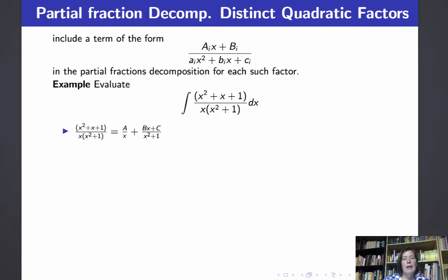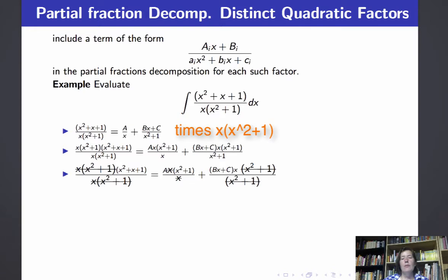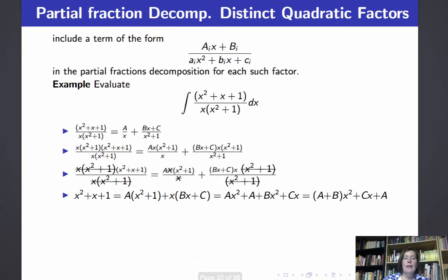Now we must solve for A, B, and C. The first step is to multiply across by q(x), the denominator on the left hand side. Multiplying across and cancelling, we end up with x² + x + 1 on the left hand side and A(x² + 1) + x(Bx + C) on the right hand side. When two polynomials are equal, the coefficients of each power of x must be equal, so we expand the right hand side, gather terms, and compare coefficients to get three equations in our three unknowns.